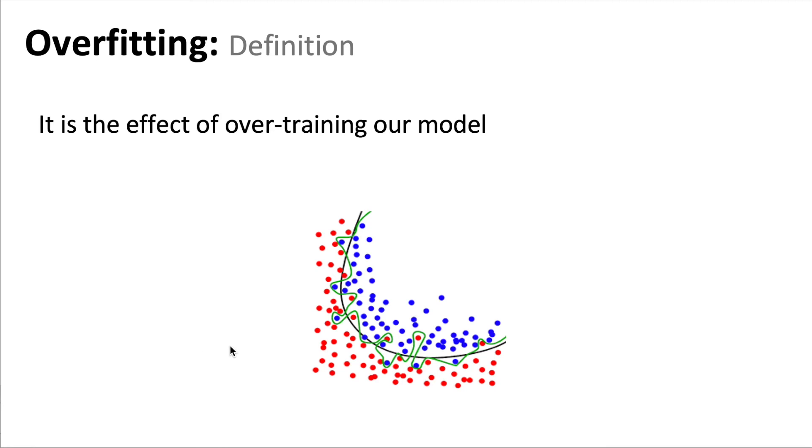For example, in this figure we can see that we have two classes of data points, the blue ones and the red ones.